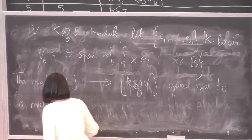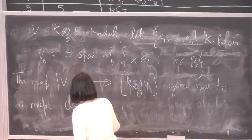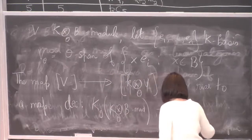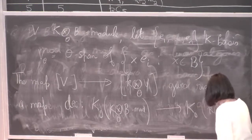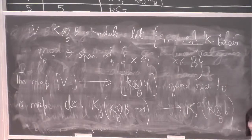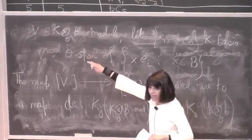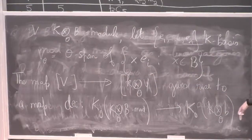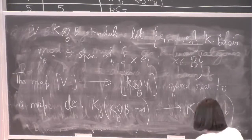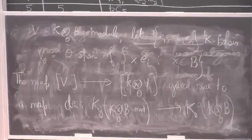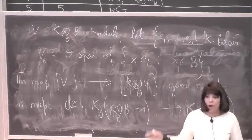If you restrict the decomposition map to irreducible, simple modules from capital K and express the answer in terms of simple modules over little k, you get the decomposition numbers. Those are the numbers — the decomposition numbers — that Gabriel talked about; it's the same map that came up in Gabriel's talk. Finding those numbers is a big problem in block theory.